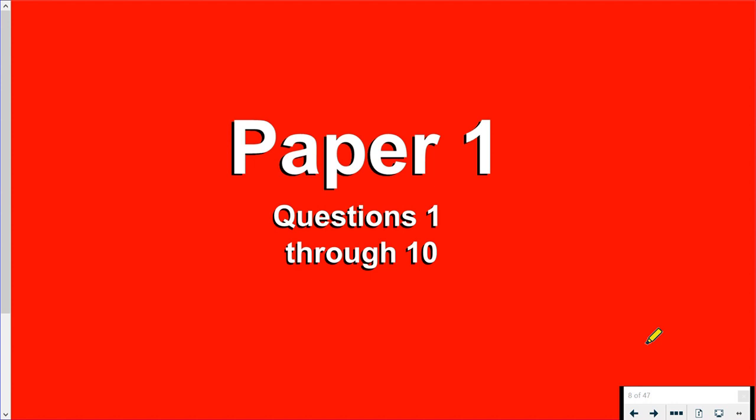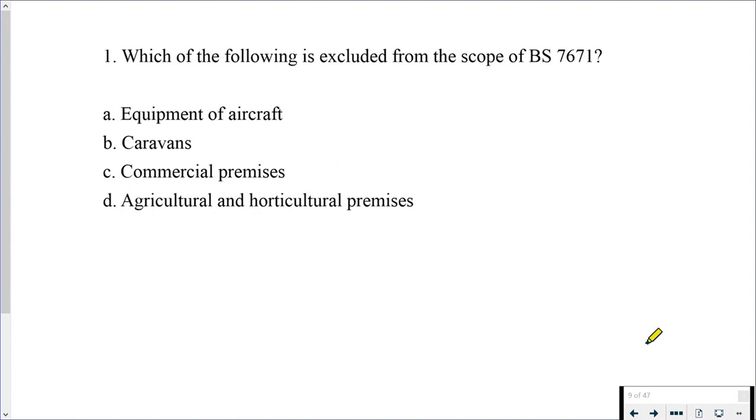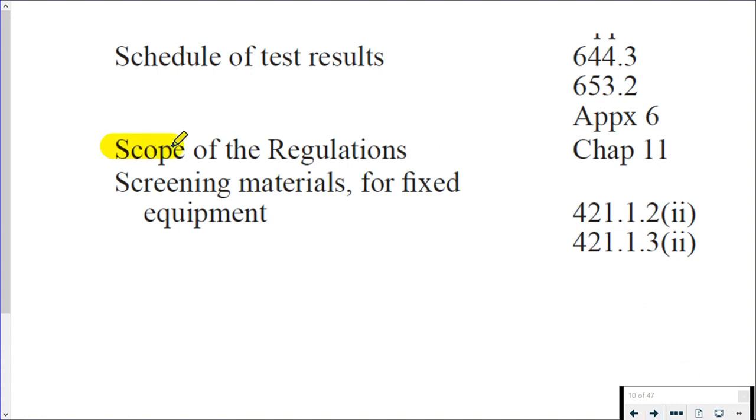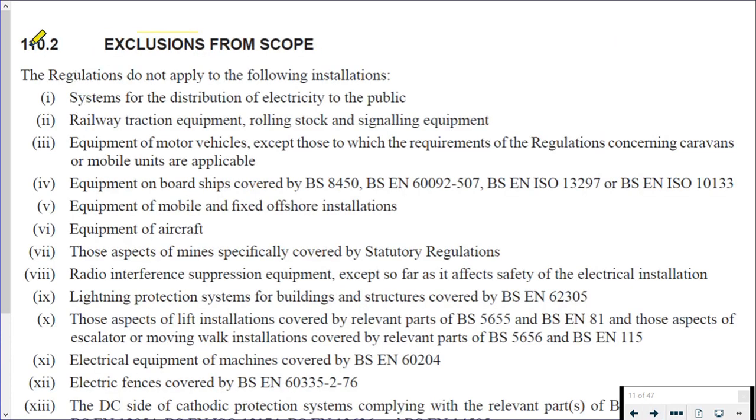Paper 1, questions 1 through 10. Remember, pause the video as we go. Question 1: which of the following is excluded from the scope of BS 7671? We've got equipment of aircraft, caravans, commercial premises, and agricultural and horticultural premises. I have never fitted a socket on a plane. But let's look at the answer. We've got scope and exclusions from the scope. We're going to look at the index at the back of the book. In the index we have scope and then we have chapter 11. When we get into chapter 11, we then have 110.2 exclusions from the scope. If you look down exclusions from the scope there, we've got 0.6 equipment of aircraft. So our first indication was right.